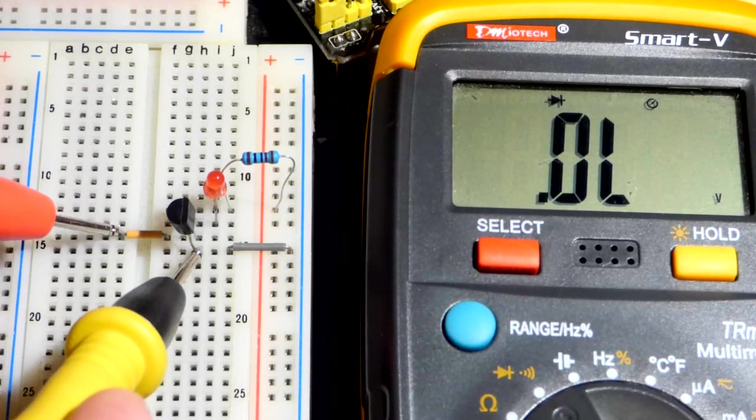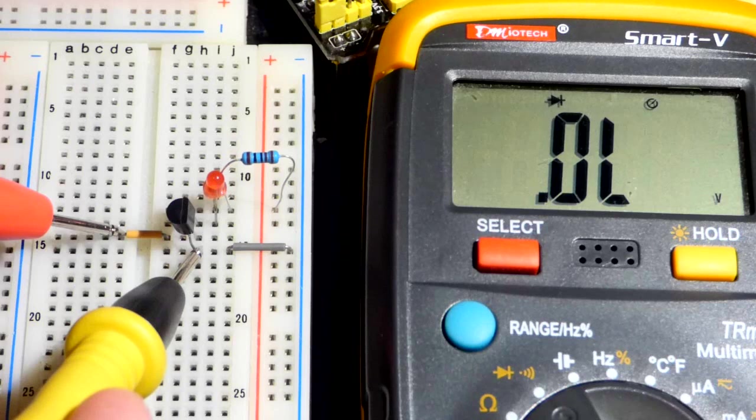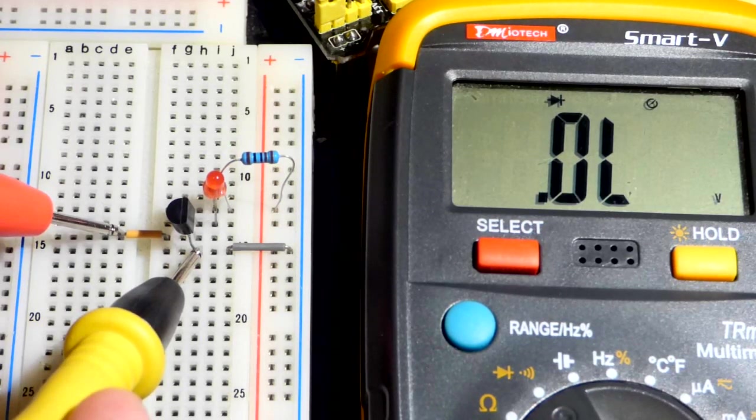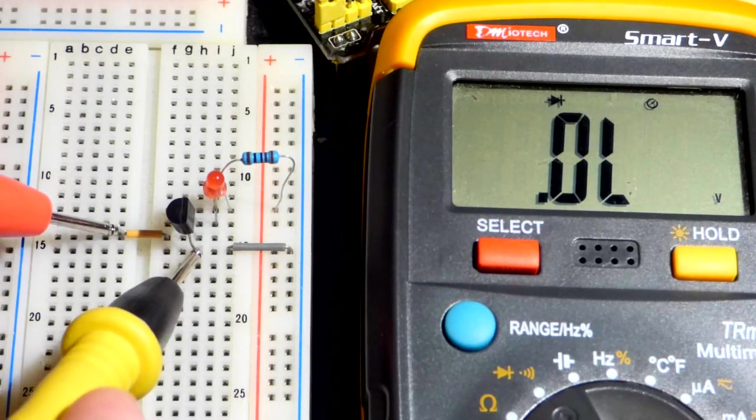And then, the red probe, we're giving a positive signal to the N-type material. So, that's a reverse bias diode. It is blocking the current from flowing through the meter right now.